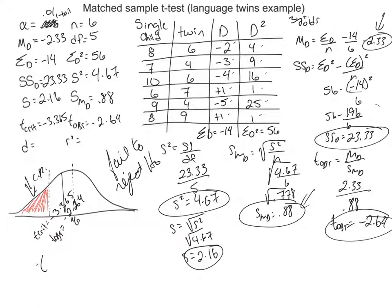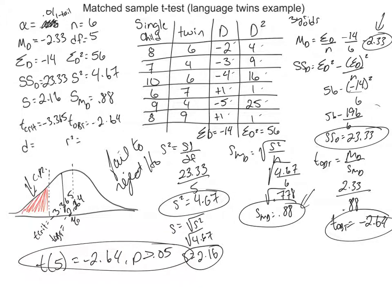The APA statement would be: t with a sample size of 6 gave a test statistic of negative 2.64, with the p-value being greater than 0.05 — we failed to reject the null hypothesis. Interestingly, if the alpha level had been set at 0.05 instead of 0.01, we probably would have been able to reject the null hypothesis.